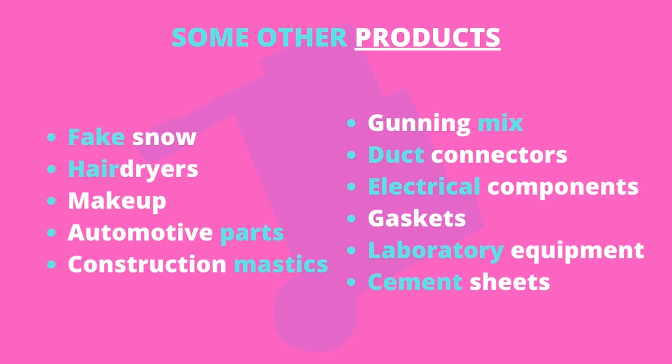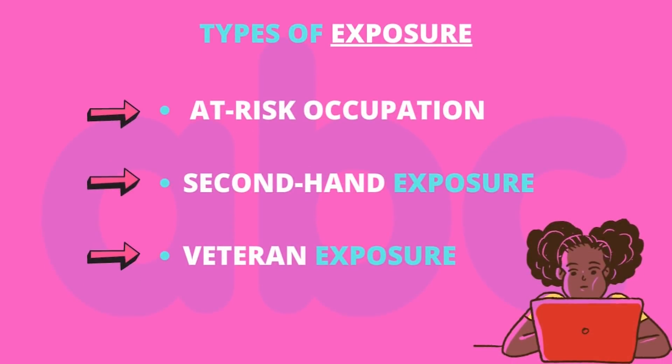As these materials are used heavily in certain occupations, those occupations may experience higher rates of exposure. Mesothelioma can be caused by three types of asbestos exposure. Firstly, at-risk occupations — workers may be exposed to asbestos on the job. High risk occupations include shipyard workers, supervisors, mechanists, and mechanics.